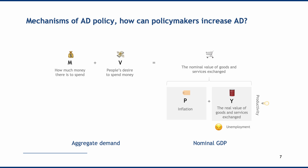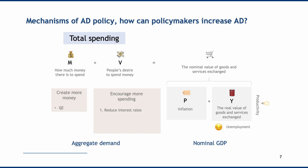Let's think about the mechanisms of aggregate demand — how policymakers can increase it. There are two sides on the left-hand side, M and V, giving two different ways to affect spending. One way is by creating more money: quantitative easing essentially increases the M variable. The other mechanism is to change people's willingness to spend the money they already have — this can be done by changing interest rates, changing taxes, or changing government spending. So there is one tool to affect M and three tools to affect V.